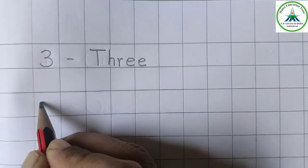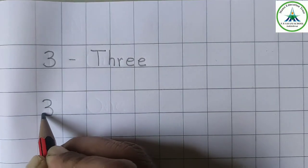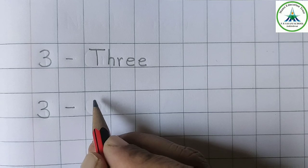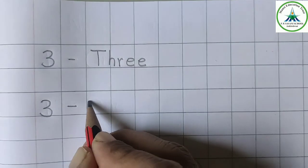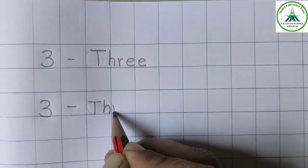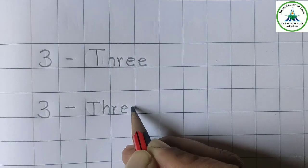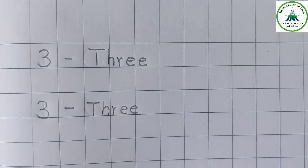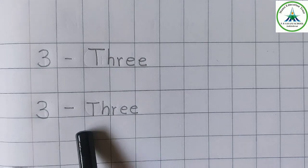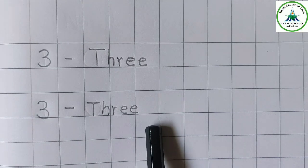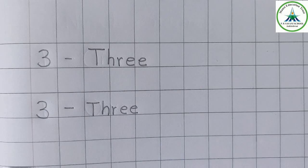So write it again. This is number 3 and the spelling of its name is T-H-R-E-E. So what is the spelling of number 3? T-H-R-E-E.